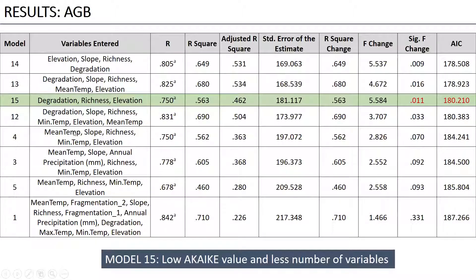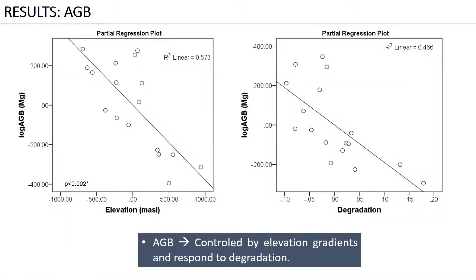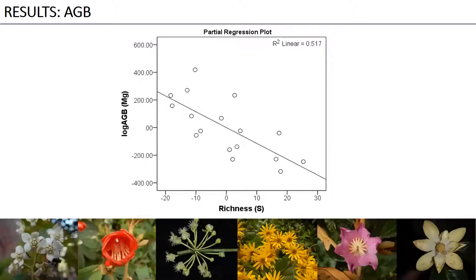When we plotted these variables with biomass, we observed that biomass is controlled by elevation gradients and responds to degradation as expected, because biomass decreases when elevation increases and when degradation also increases. We can find more biomass when degradation is low and at lower elevations. But something totally unexpected is that above-ground biomass decreases when richness increases, and we can find more biomass in patches of forest where there are just a small number of species.